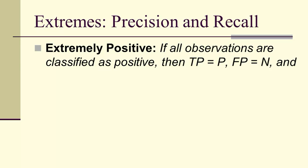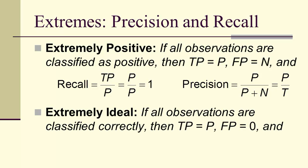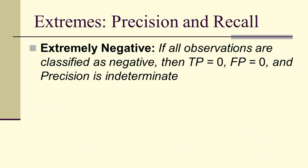Let's go back and look at extremely positive. The recall is 1, we've seen that already. The precision is the number of positives over the total. If we're extremely ideal, if everything was classified correctly, then we get 1,1, which is the ideal point. If we're extremely negative, then everything is classified as negative. In this case, the precision is indeterminate because we'd be dividing by 0.